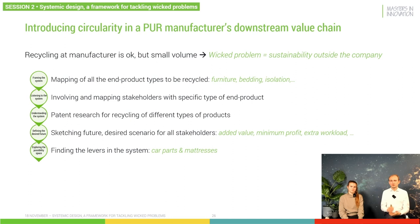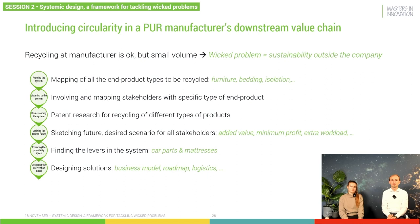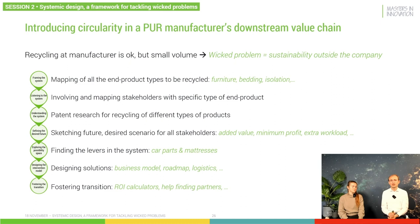As it turns out, it was recycling car parts and mattresses. Those are two products where there is quite a volume of polyurethane and where there is also a road for circularity, and where there can be a business case supported by the stakeholders and the rest of the ecosystem. As a conclusion of this exercise, it was also necessary to design business models, roadmaps, and logistics to make this work. And in the end, it was also about fostering change with the right KPIs and following these KPIs together with the partners in the ecosystem. This is an example of how we took the systemic design framework and applied it to a specific case for one of our customers.